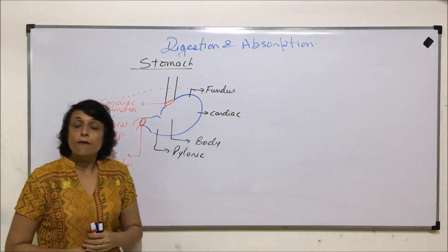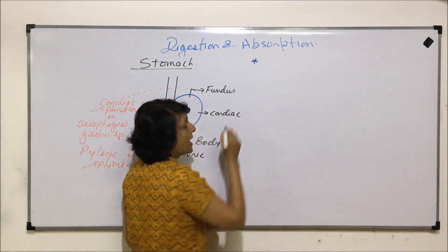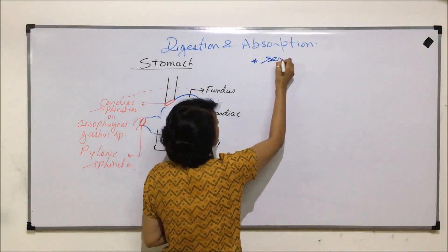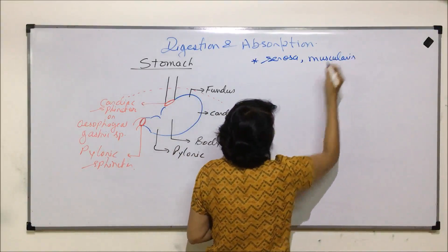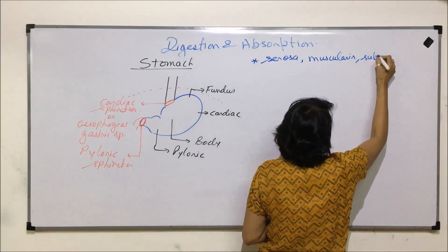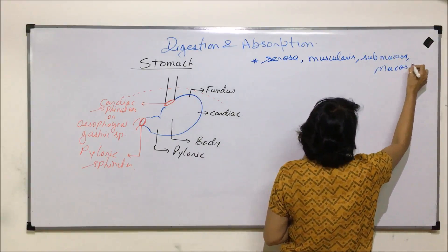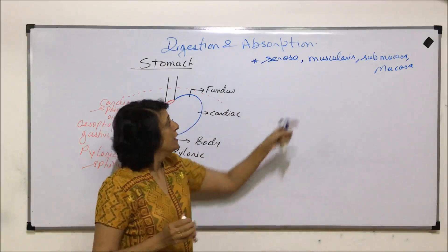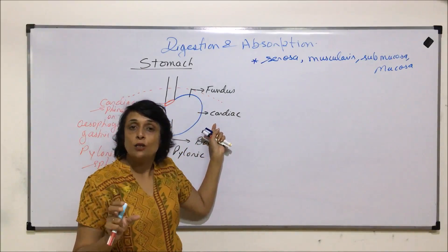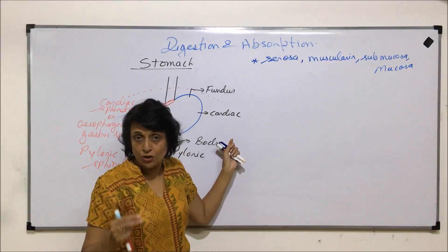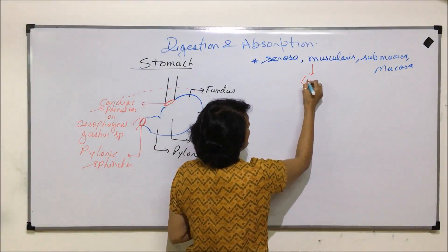If we talk about the histology of the stomach, it is made up of the same four layers: outermost serosa, then muscularis, then sub-mucosa, and the innermost is mucosa. In the muscularis layer, the outer layer is longitudinal muscle and inner to it is circular muscle.